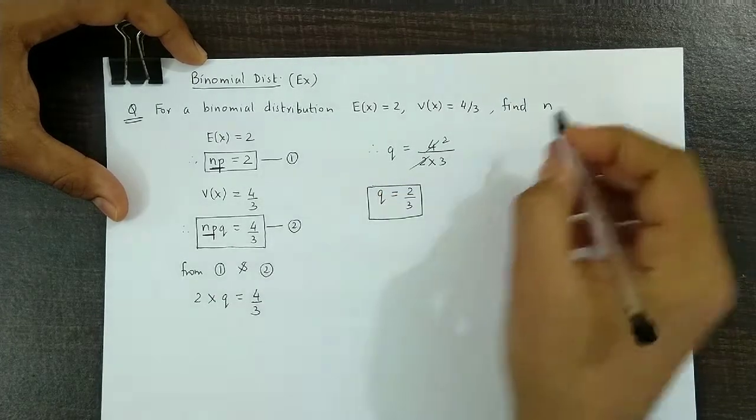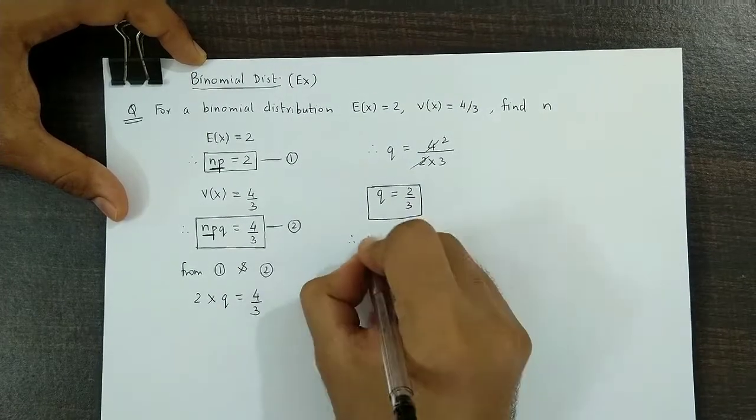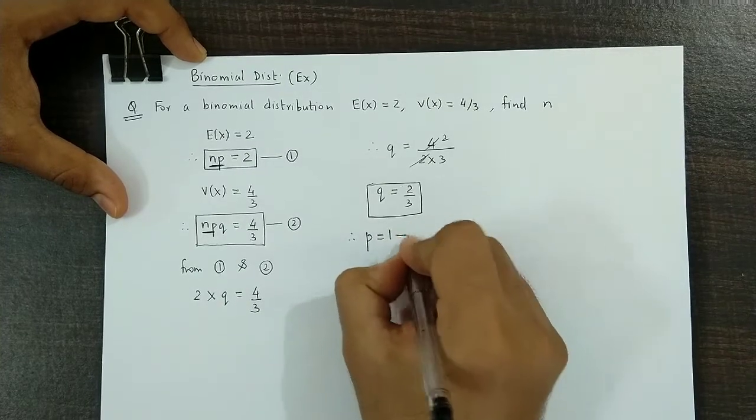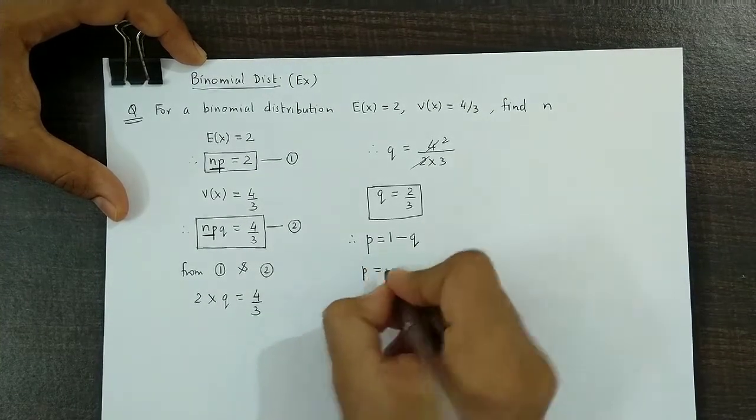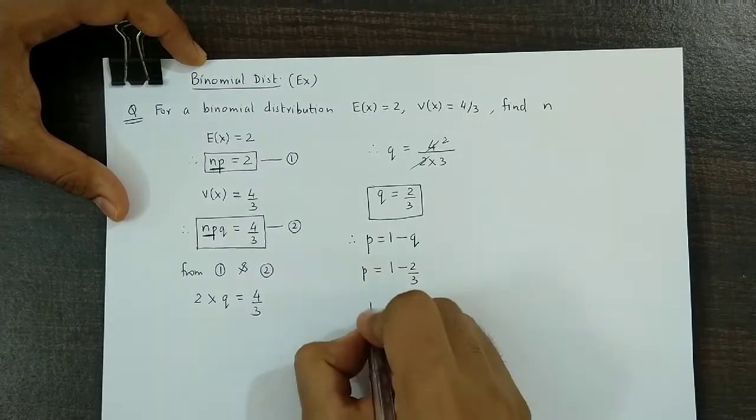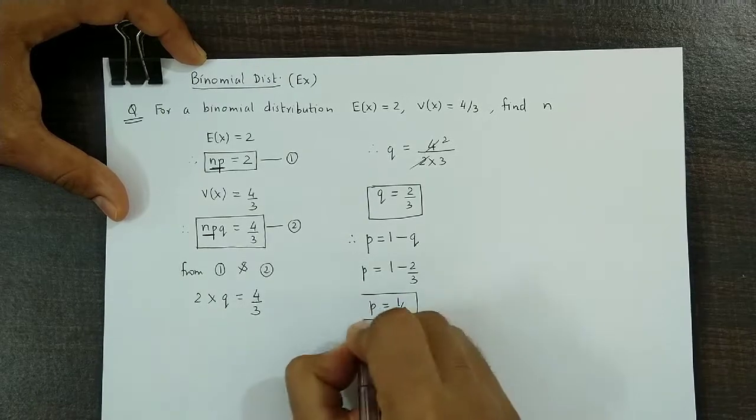But we have to obtain N. Now using Q we could obtain the value of P, that is probability of success, which is 1 minus Q. So P is equal to 1 minus 2/3. Therefore the value of P is 1/3.